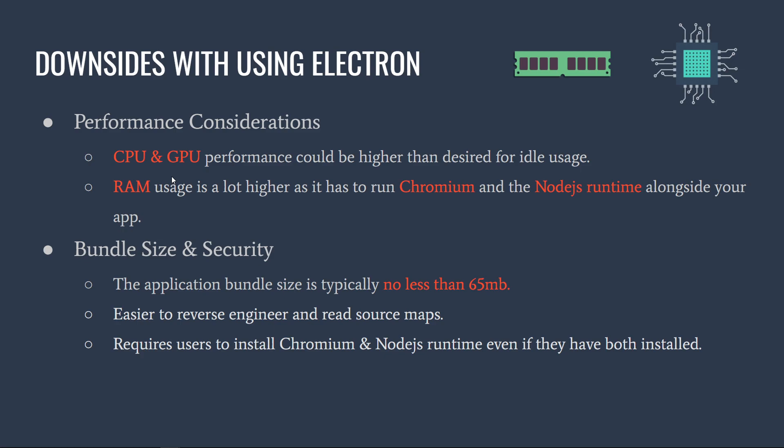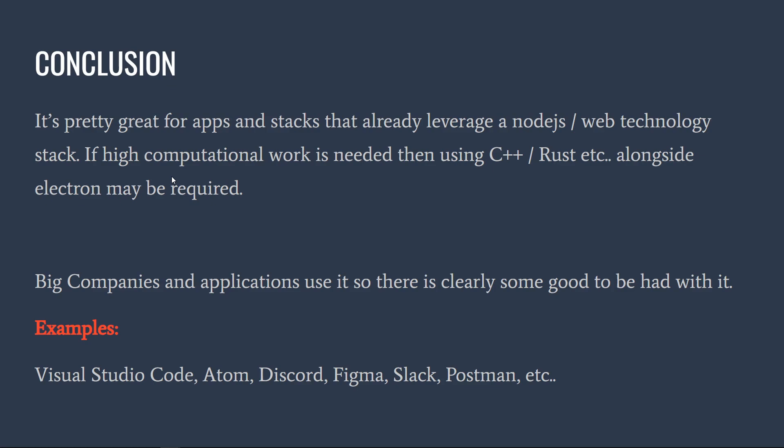There are some big performance considerations, but for the most part they can usually be offset by using a little C code alongside your application. There are obviously big companies and good use cases for Electron — popular apps like Visual Studio Code, Atom, Discord, Figma, Slack, Postman, and many more use Electron under the hood. These are big name players, and apps like Figma, Slack, and Discord generate a lot of money, so there's definitely a use case for it. But for apps that really do need high performance — like games, simulation software, or lower-level stuff — Electron is not your best bet, and you'd rather write those in a lower-level language like C.